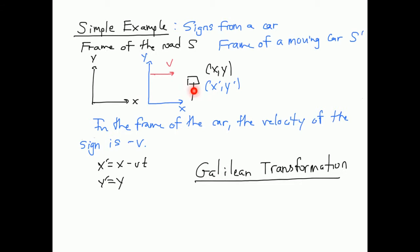The x position in the frame of the car has to be decreasing because the sign is getting closer and closer. How much is it decreasing? From kinematics, you know that the change in position over some time period is v times t, so that's where that comes from. The y position doesn't change because the velocity is not in the y direction. That feature is actually going to hold true in Lorentz transformations as well, but this is not going to be the right form for a Lorentz transformation.